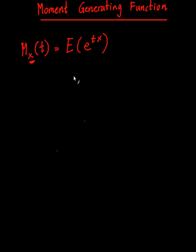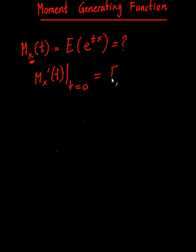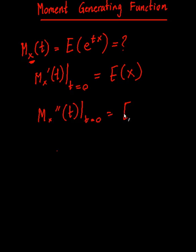It's okay if you don't understand this just yet, but basically what we're going to end up doing is we're going to differentiate this function that we end up getting — whatever it is — with respect to t, and set t equal to zero. That will give you your first moment, the expectation of X. If you differentiate again and set t equal to zero, you get the second moment — that's the expectation of X squared, not variance. To get variance, you have to subtract the expectation of X squared minus this thing squared.